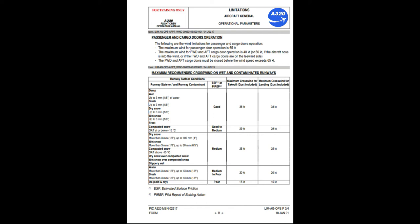For compacted snow at or below minus 15°C, estimated surface friction or pilot report of braking action: good to medium. Maximum crosswind for takeoff (gust included): 29 knots. Maximum crosswind for landing (gust included): 29 knots. Runway contaminants: dry snow more than 3mm up to 100mm, wet snow more than 3mm up to 30mm, compacted snow above minus 15°C, dry snow over compacted snow, wet snow over compacted snow, slippery wet. Estimated surface friction or braking action: medium. Maximum crosswind for takeoff and landing (gust included): 25 knots.